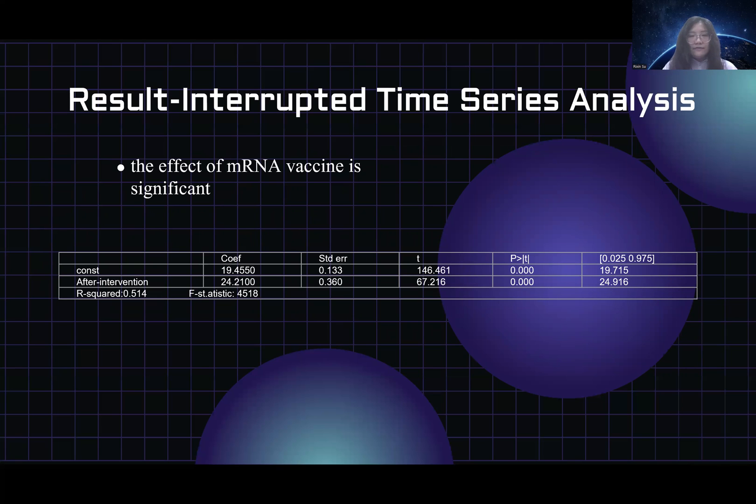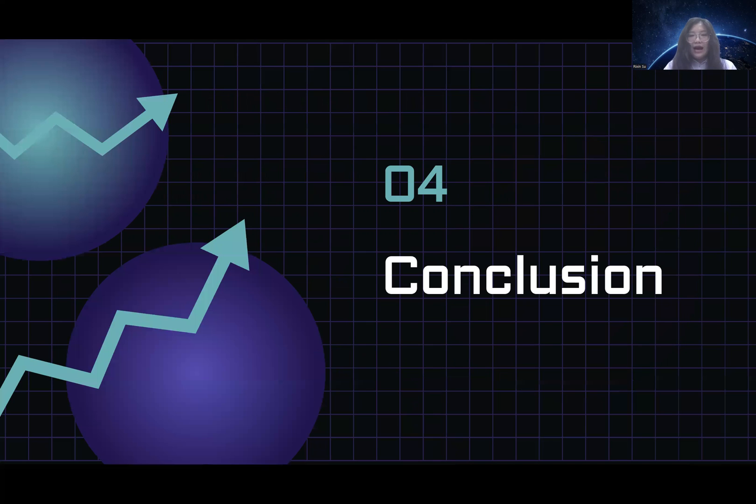Then let's focus on the effect of the announcement of vaccine. We can see that the interrupted time series analysis results show both beta 2 and beta 3 are statistically significant, shown as the tables after intervention and coefficient. So this shows the effect of mRNA vaccine is significant.